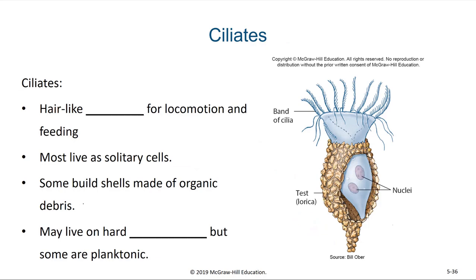Another unicellular protist are the ciliates. Ciliates have hair-like cilia for moving and for feeding. Most live as solitary cells, but some end up building shells made out of organic debris or sometimes even sand. Many of these ciliates live on hard substrates, yet some can be planktonic.